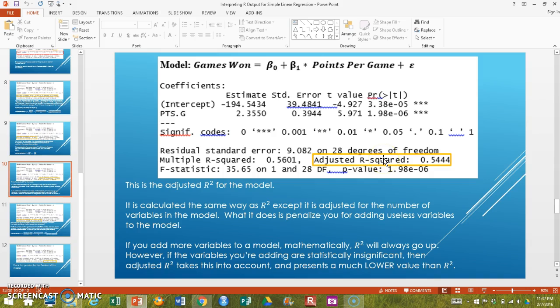The problem is that if we keep adding more and more explanatory variables to our model, those variables may not actually be adding a lot more explanation. They may just be artificially increasing multiple R-squared, but they may not actually be statistically significant. They may just be worthless. So what the adjusted R-squared does is it penalizes people for adding useless variables to the model.